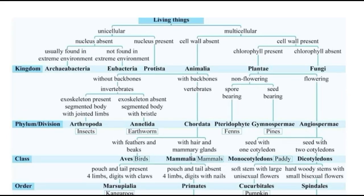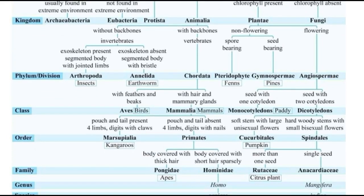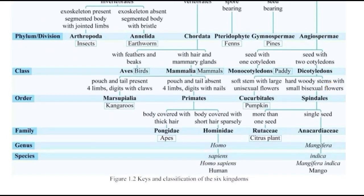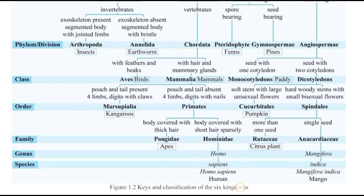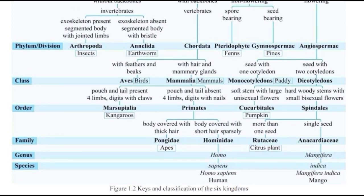Grade 11 Biology Chapter 1, Figure 1.2: Keys and Classification of Kingdoms. The Kingdom is called Tashi-Loka. Tashi-Loka is called Keys. The classification is called mu.